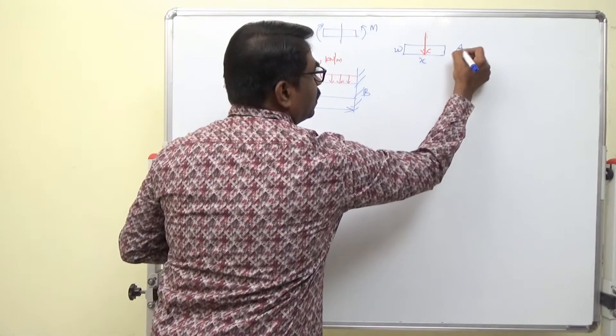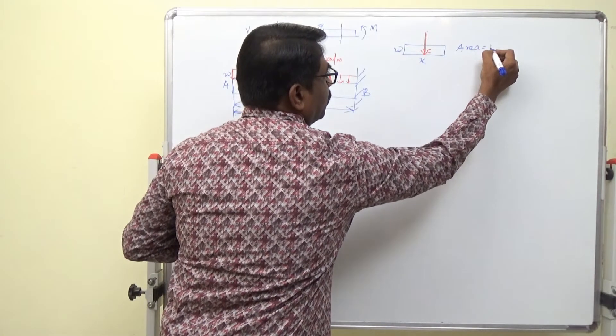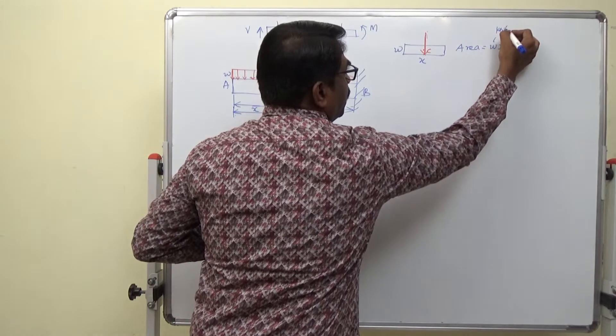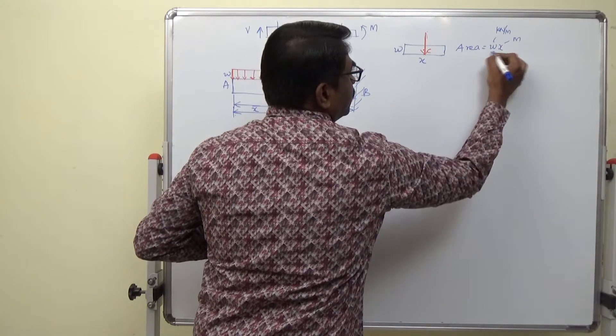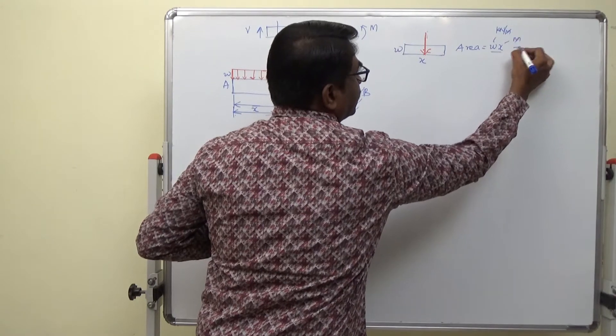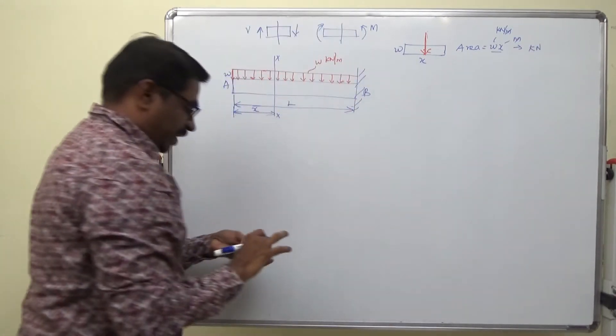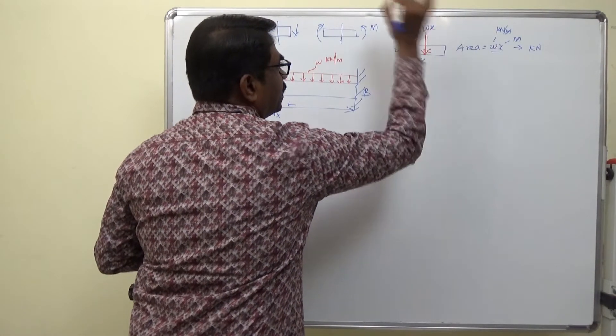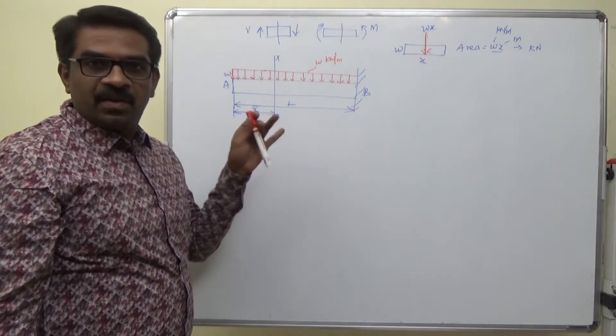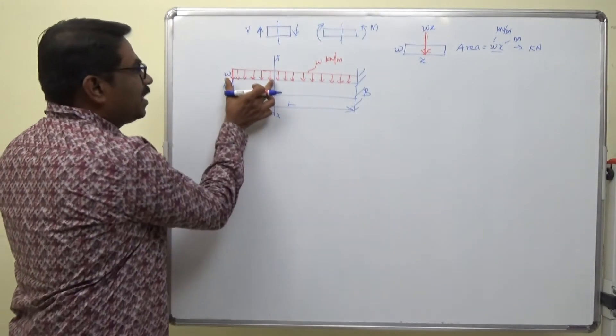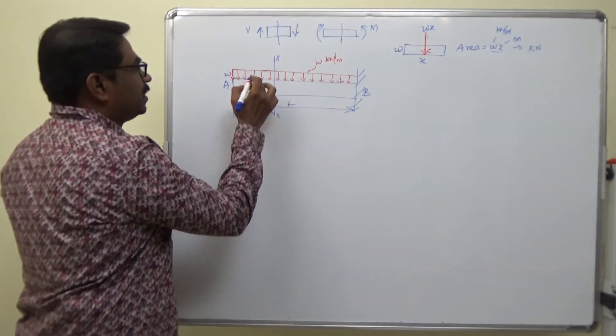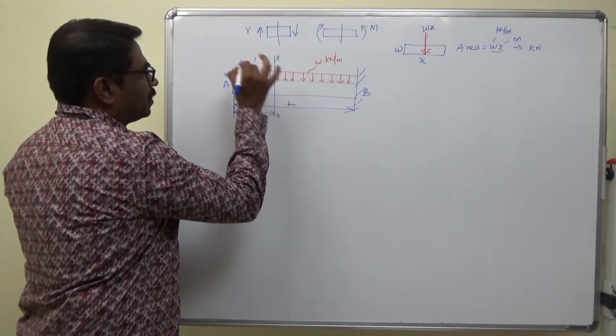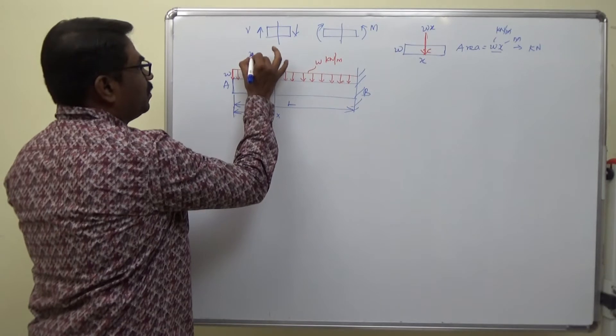It is W and it is x. So it is the area W into x. It is kilonewton per meter, it is meter, so meter gets cancelled, it becomes kilonewton. So this load is W into x. That is the point load. The UDL is changed into point load and it is passing through the mid. I have now placed it, it is W into x.